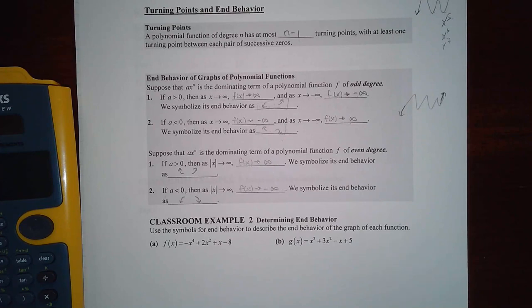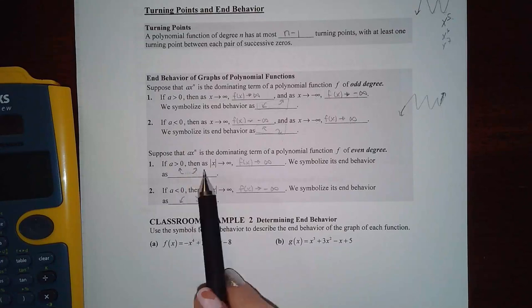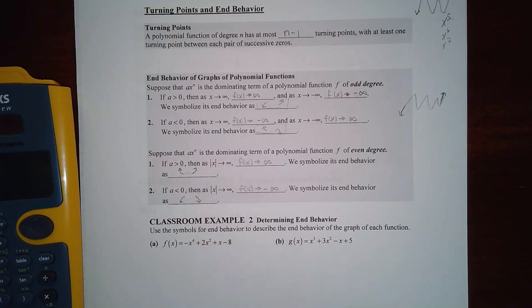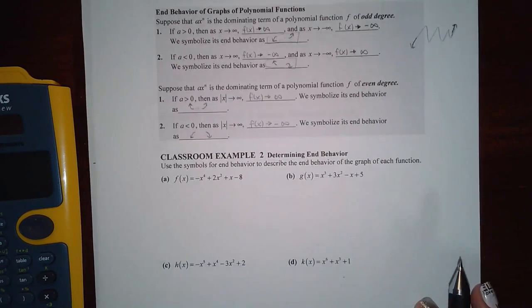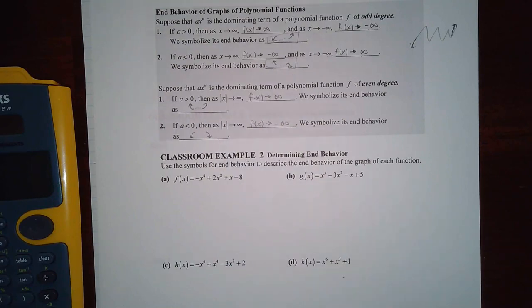So here we have for even degree, they kind of look like parabolas. So yeah, there's something going on in here. There might be a bunch of wiggling going on, but it should be going up on both ends if your coefficient is positive. And if your coefficient is negative, then it should be going down on both ends. So here it says determining the end behavior and then use the symbols for the end behavior. So they don't want all that verbiage, x goes to infinity, all that stuff. They just want the little picture.